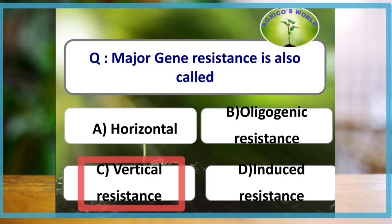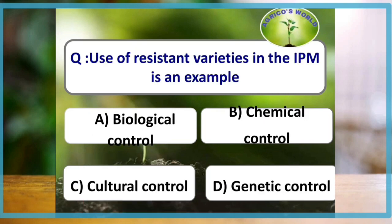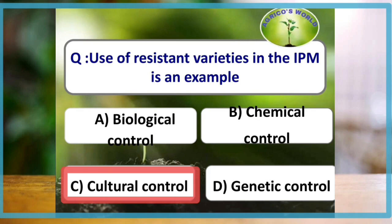Major gene resistance is also called vertical resistance, whereas minor gene resistance is called horizontal resistance. Use of resistant varieties in integrated pest management is an example of cultural control.